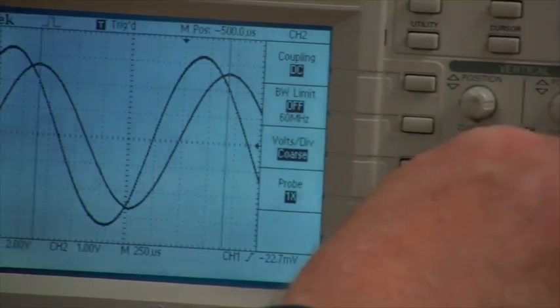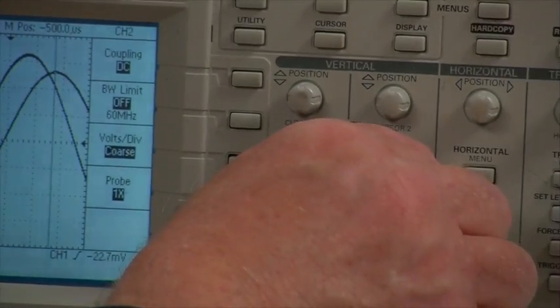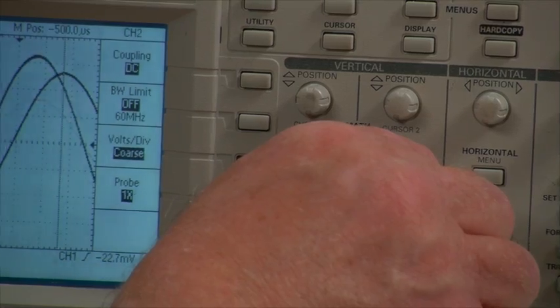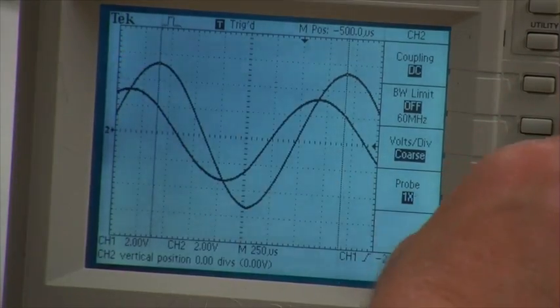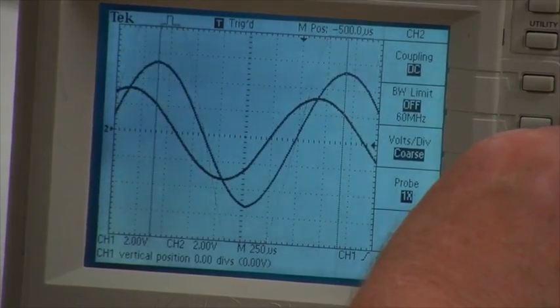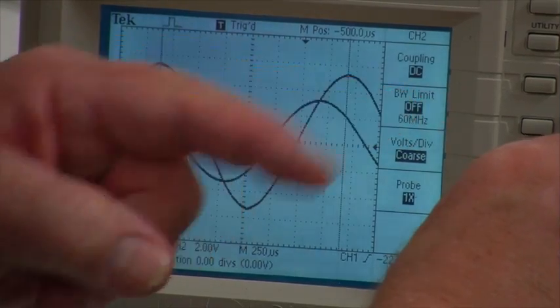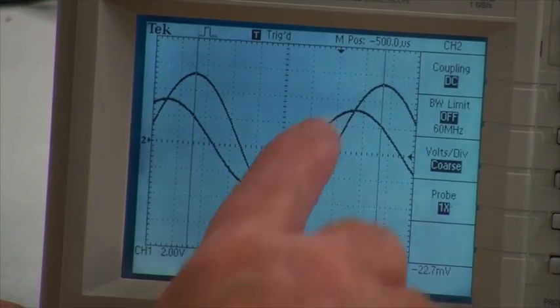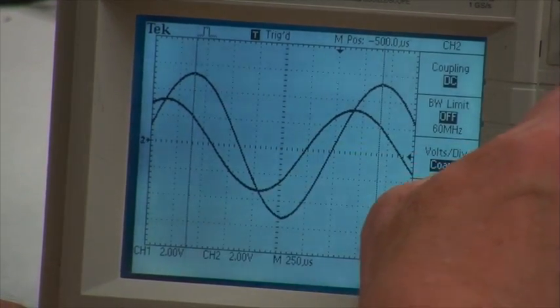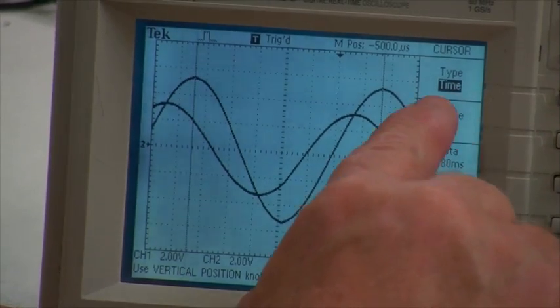So we would say that this signal here, and which one is that? This is channel two here. Channel two is leading and channel one, this one, is lagging. And we can determine that phase shift by again pressing the cursor menu.